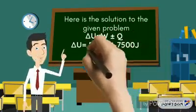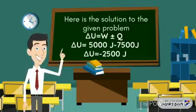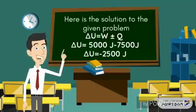Delta U is equal to W plus or minus Q. Substitute the values of heat and work which are 5,000 joules minus 7,500 joules. Simplifying further, we got negative 2,500 joules.